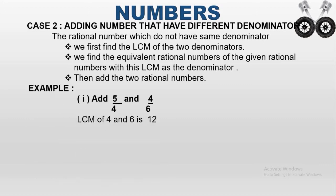For example, add 5/4 and 4/6. These 2 rational numbers have different denominators. First, we have to find the LCM for 4 and 6. We find the common factor for 4 and 6, which is 2. Two 2s are 4, three 2s are 6. There is no common factor for 2 and 3, so we take 2 first.